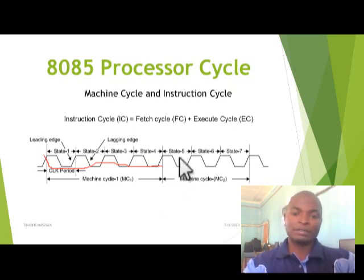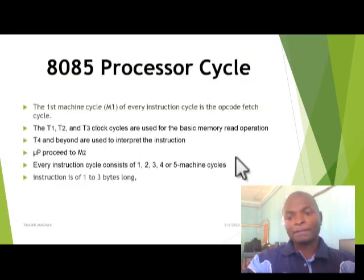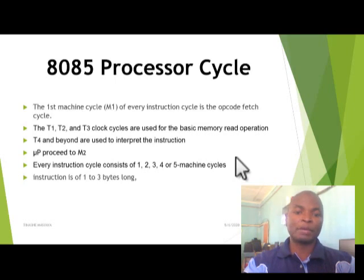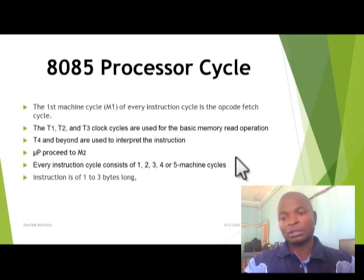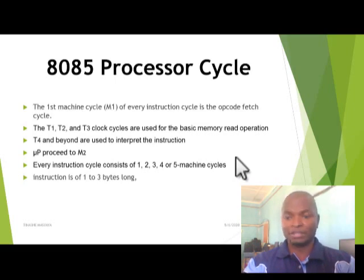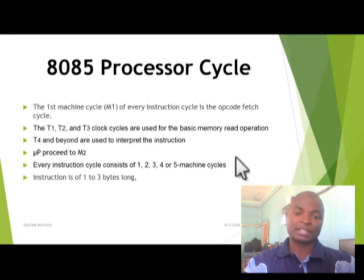The first machine cycle of every instruction is the opcode fetch — the operation code fetch. In that opcode fetch, T1, T2, and T3 clock cycles are used for the basic memory read operation to read the data in memory. Then the fourth clock cycle and beyond are used to interpret or decode the instruction. The microprocessor then proceeds to machine cycle two and other machine cycles. Every instruction cycle consists of one, two, three, four, or five machine cycles, and the instruction can be a one-byte up to three-byte instruction in the 8085.